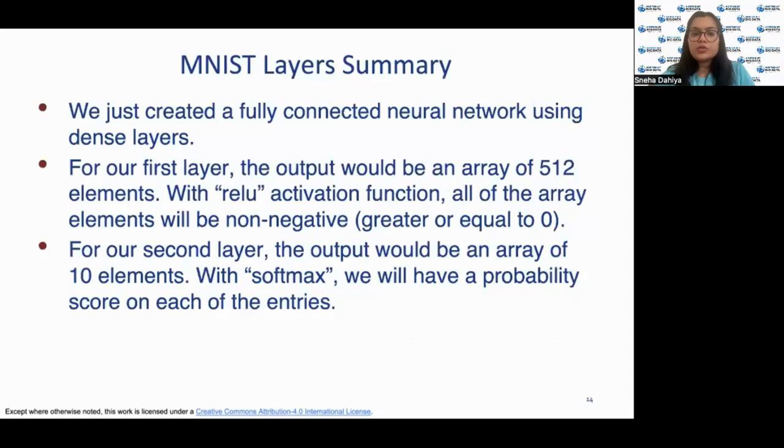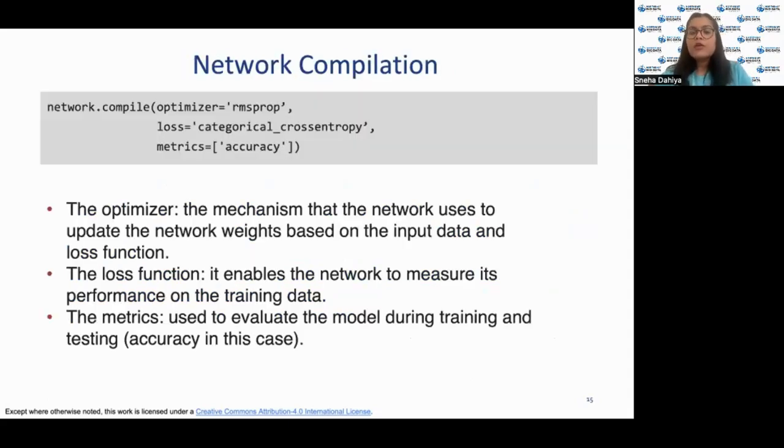Moving on to the next step is the network compilation. First, we have created layers of a neural network. Now we'll be compiling the network by defining the loss function, optimizer and the tracking metrics. The optimizer is basically the mechanism that the network uses to update the network weights based on the input data and loss function.